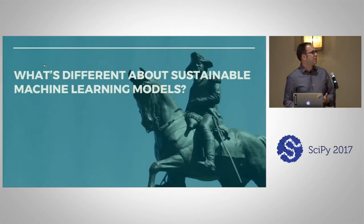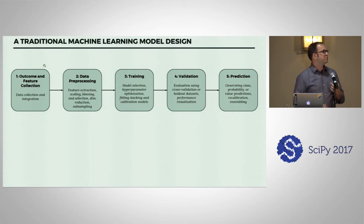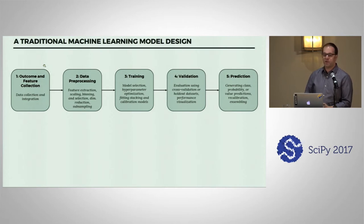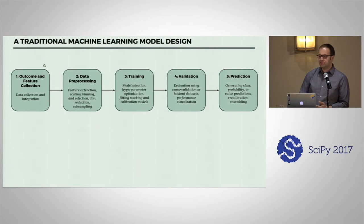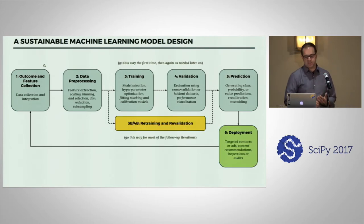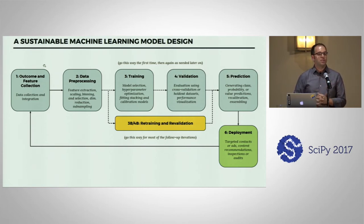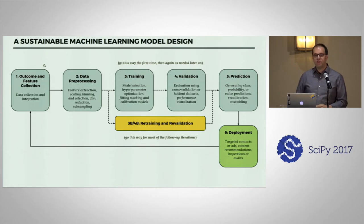So what's unique about these models? To put it in context, it helps to start with a traditional machine learning model — what you'll see in textbooks or data science 101 tutorials. You gather your data, prep it, train a model, validate it, and create predictions. For a sustainable model there are just a couple of extra steps. The most important is a deployment step where you put predictions out in the real world to do things like targeting ads, fundraising solicitations, recommending content, or driving audits — and then you feed that back into the first stage as you iterate.